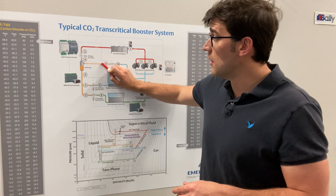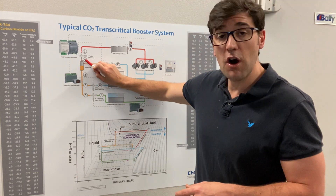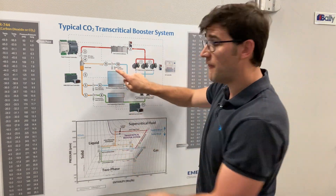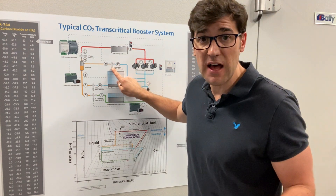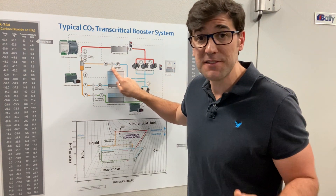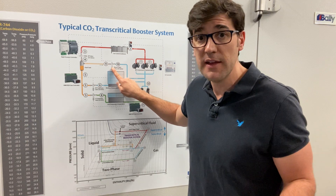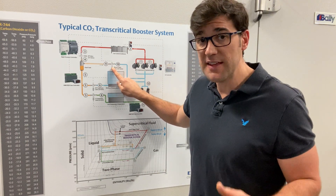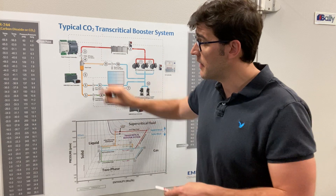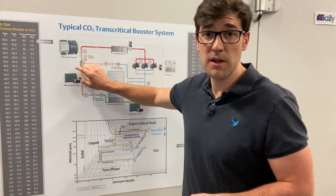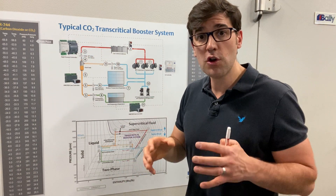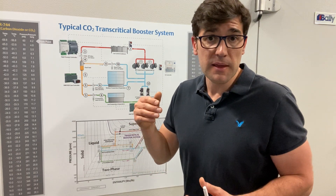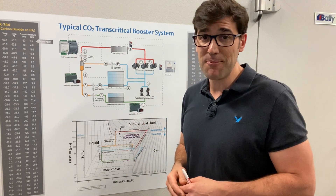There's another line here — we go from four to nine, to a valve we call our bypass valve, or gas valve, or flash gas bypass valve. The main function of this valve is to bypass gas to maintain a constant pressure in the flash tank, so you have good quality liquid going to both your medium temp and low temp evaporators.